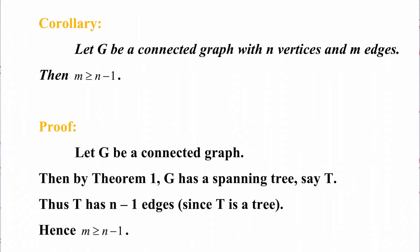Let us now see a corollary to the theorem we just studied. Suppose G is a connected graph with n vertices and m edges; then m is greater than or equal to n minus 1. The proof: let G be a connected graph. By the theorem just studied, G has a spanning tree T. Then clearly T has n minus 1 edges since T is a tree. So the number of edges m is greater than or equal to n minus 1, and that proves the corollary.